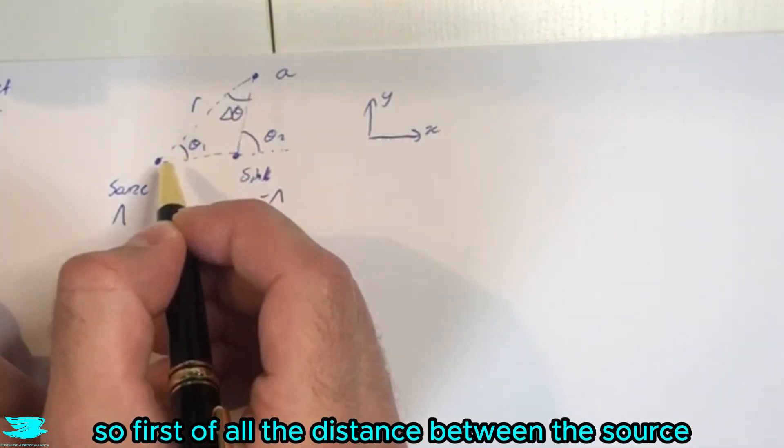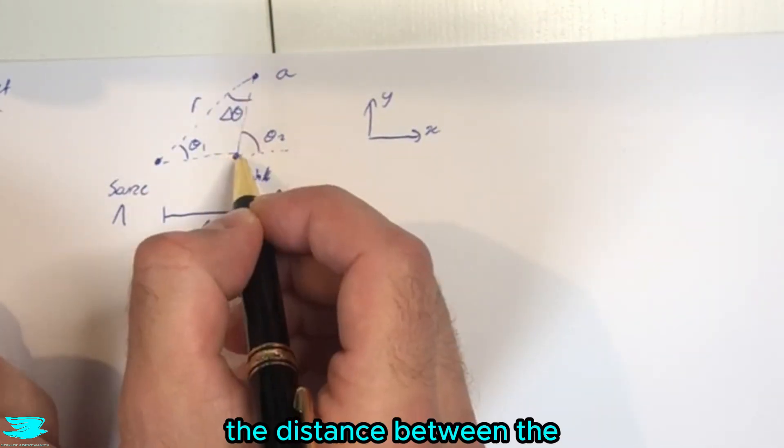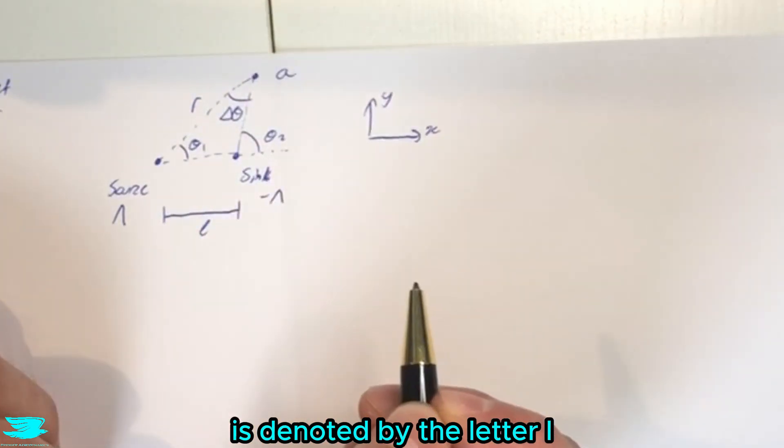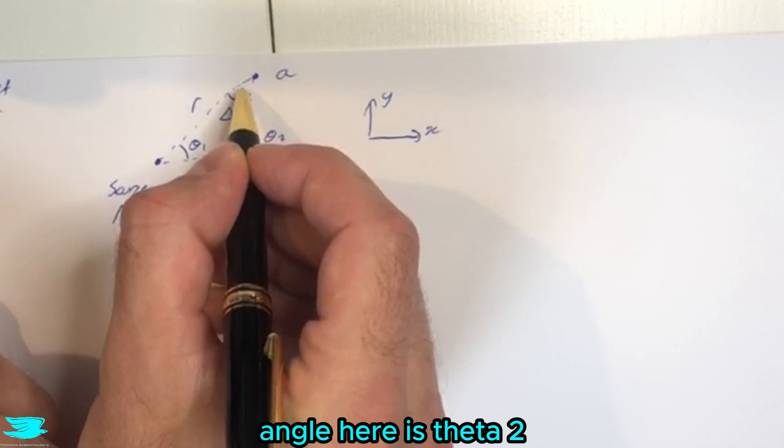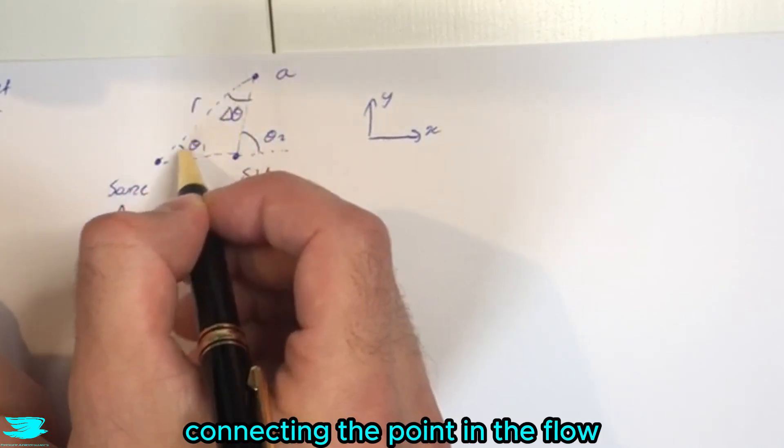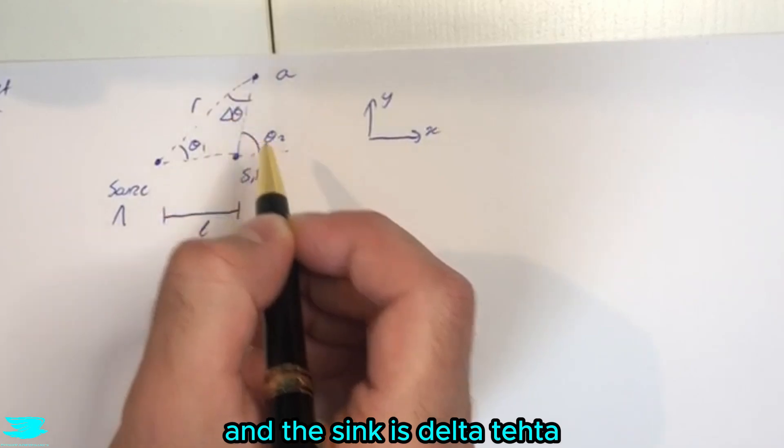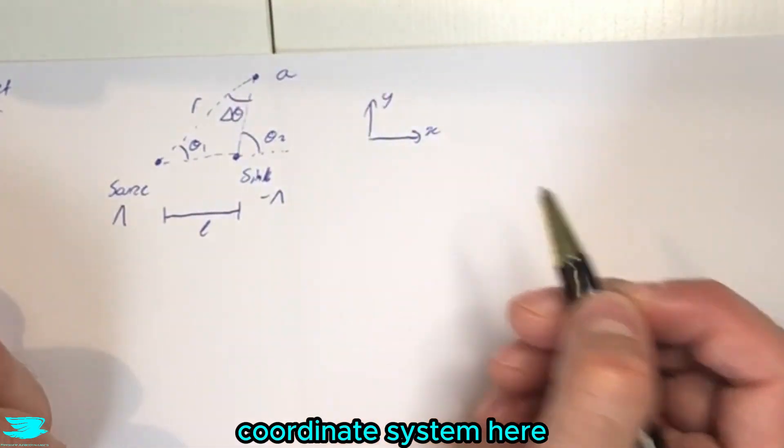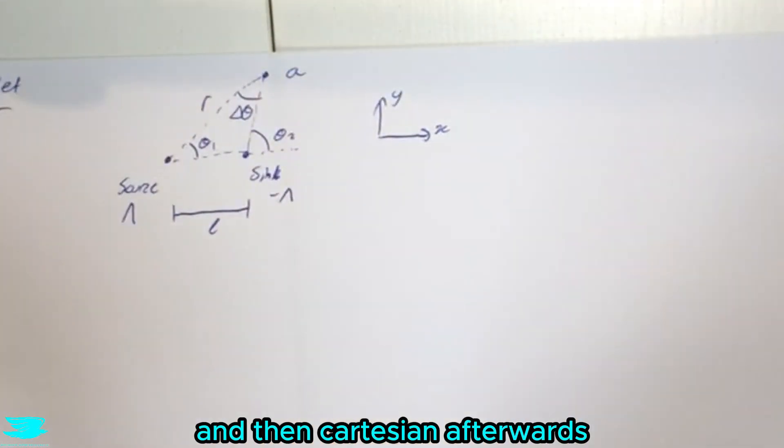So first of all, the distance between the source and point A is denoted by the letter R. The distance between the sink and the source is denoted by the letter L. And the angle here is theta1, angle here is theta2 and hence the difference between the line connecting the point in the flow and the source and the point in the flow and the sink is delta theta. And I've just put the Cartesian coordinate system here which we'll look at later. We don't need to look at it now.